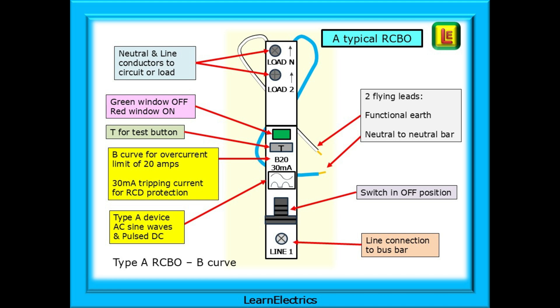This device has a residual tripping current of 30 milliamps. The B curve part is for overcurrents, and shown here is a B20 device. It will follow the time and current curves for a 20 amp B curve as shown in Appendix 3. Pause the video and take a moment to understand the sketch.